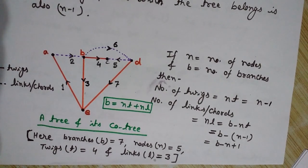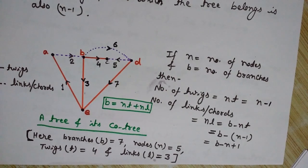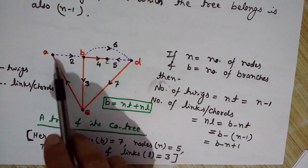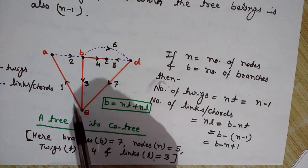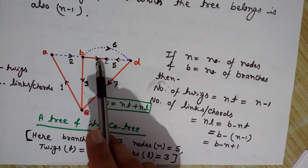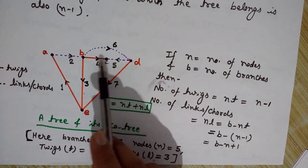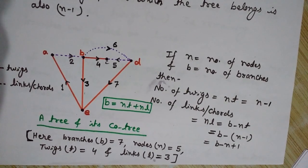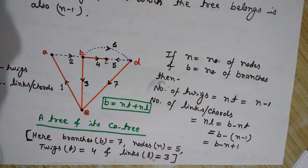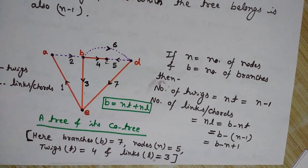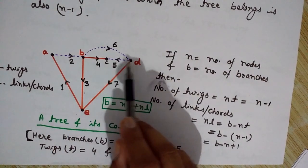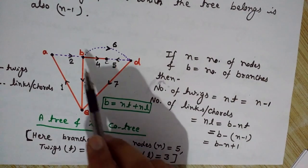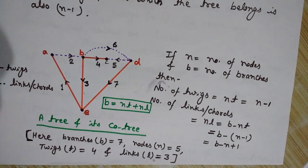Now we will see various properties of a tree. The first property is that it is possible to draw many trees for a given graph — there should be no loop and all nodes should be covered, allowing multiple valid combinations. The second property is that the number of branches in a tree, called twigs, is equal to n minus 1, where n is the number of nodes. Here that gives 5 minus 1 equals 4 twigs.